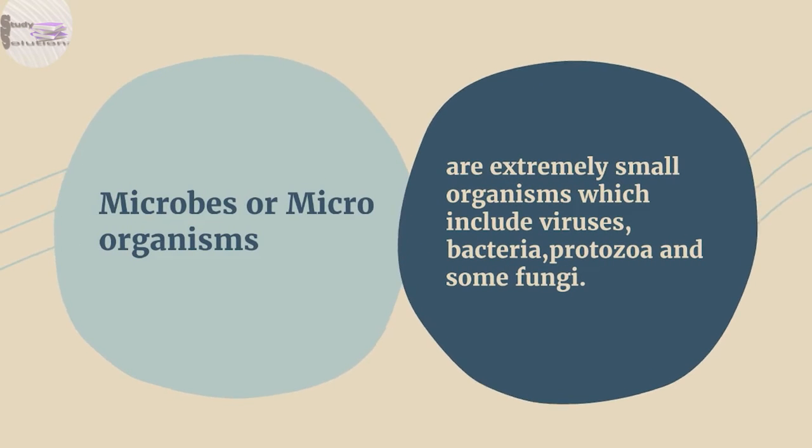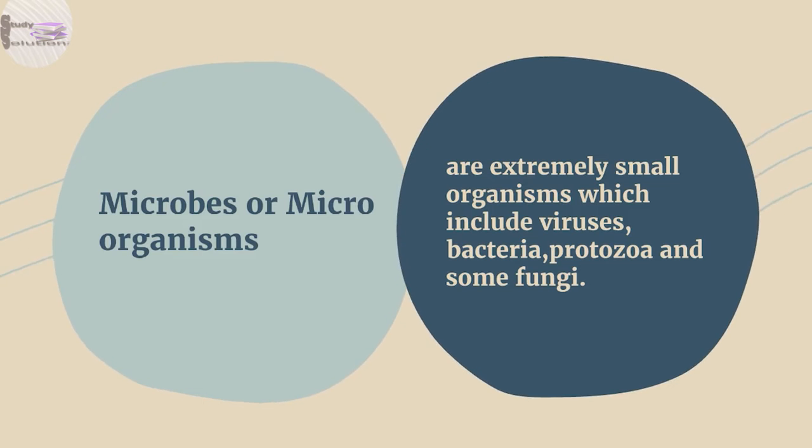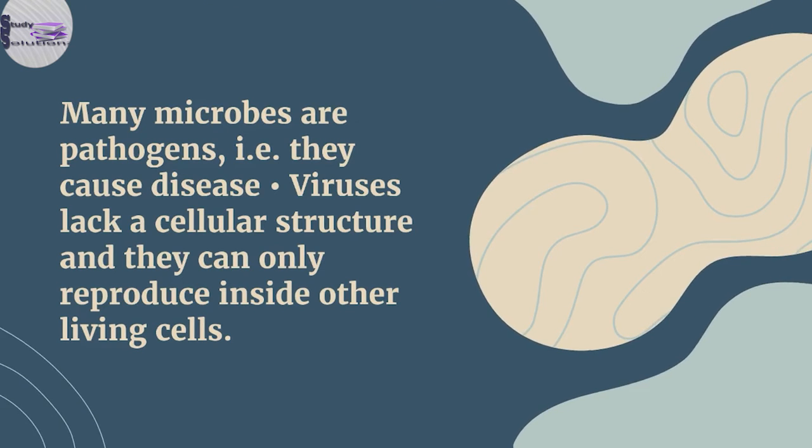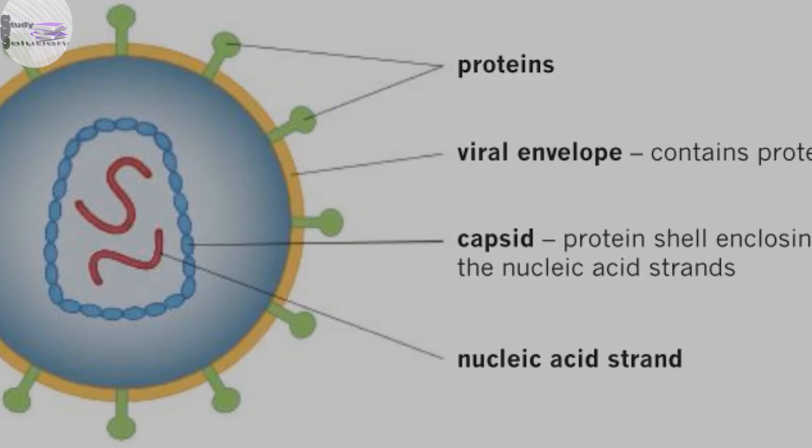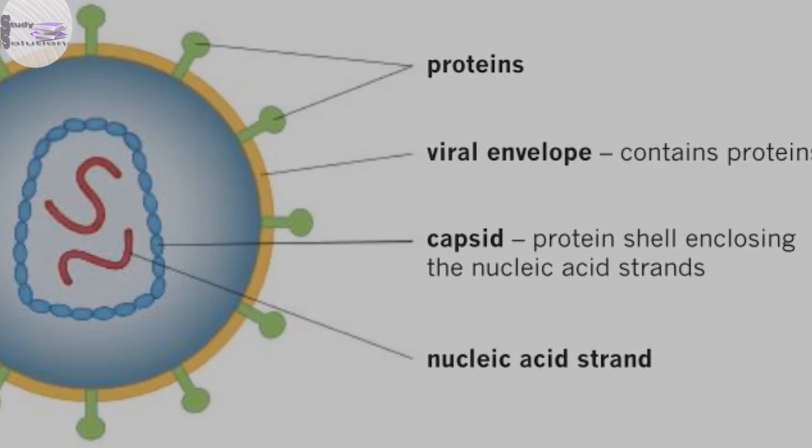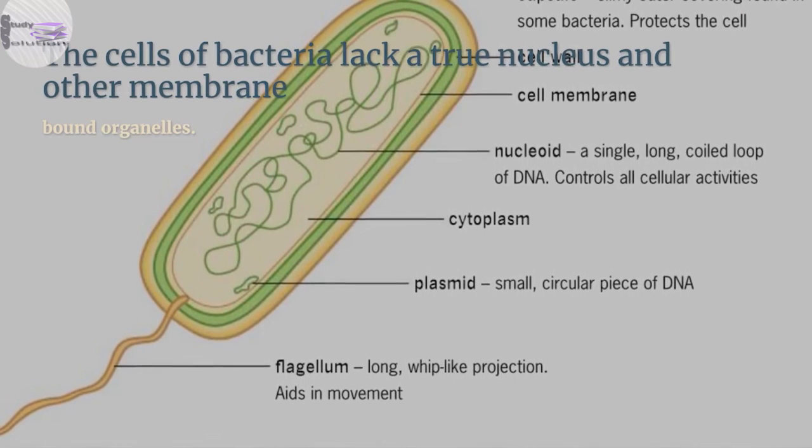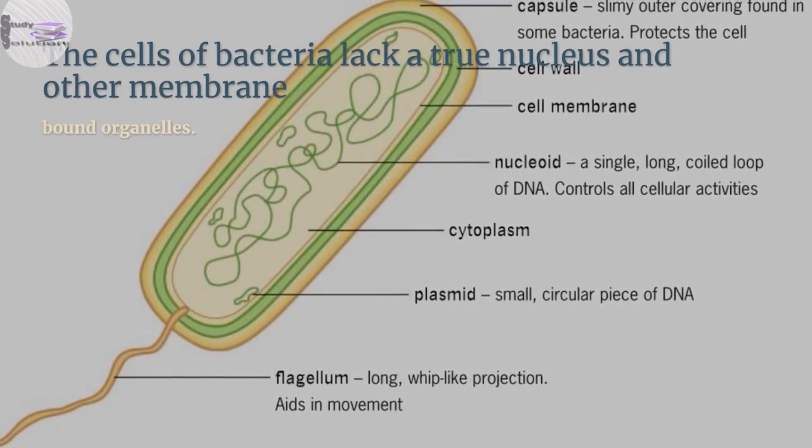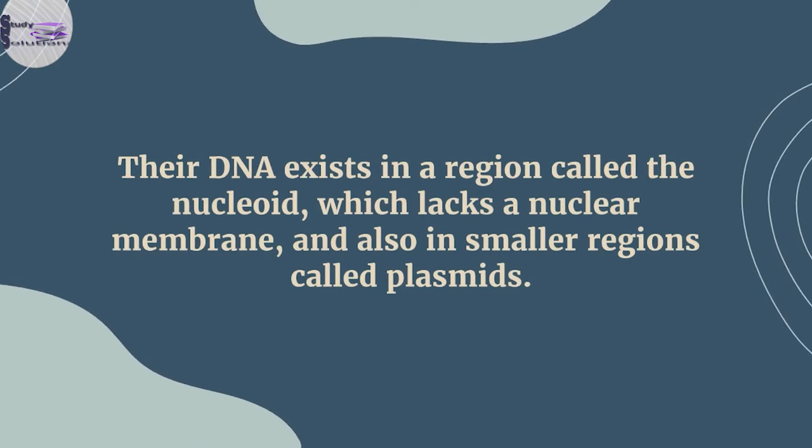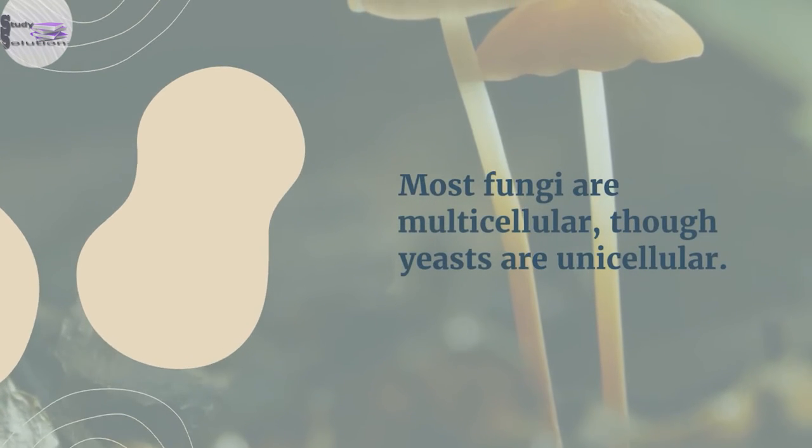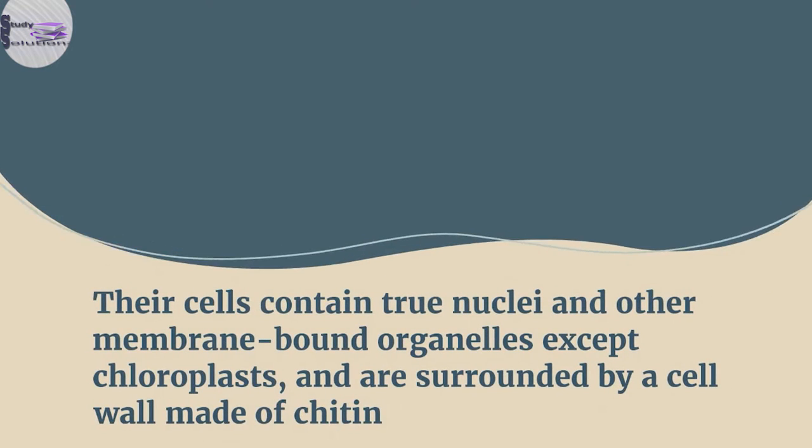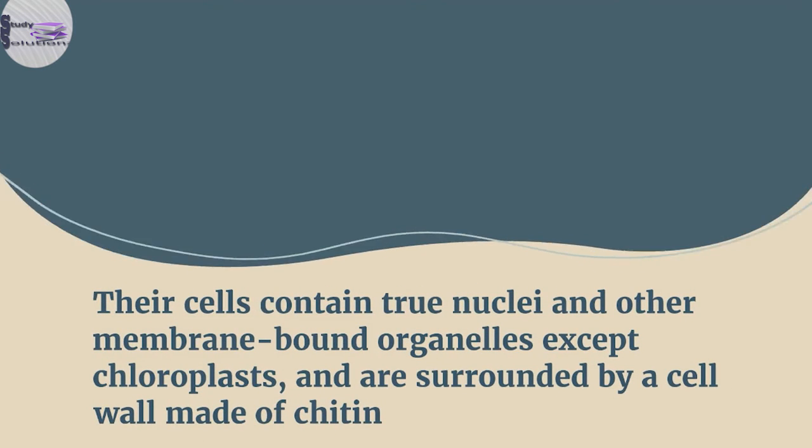Microbes. Microbes or microorganisms are extremely small organisms which include viruses, bacteria, protozoa and some fungi. Many microbes are pathogens, that is they cause disease. Viruses lack a cellular structure and they can only reproduce inside other living cells. The cells of bacteria lack a true nucleus and other membrane-bound organelles. Their DNA exists in a region called the nucleoid which lacks a nuclear membrane and also in smaller regions called plasmids. Most fungi are multicellular, though yeast are unicellular. Their cells contain true nuclei and other membrane-bound organelles except chloroplasts and are surrounded by a cell wall made of chitin.